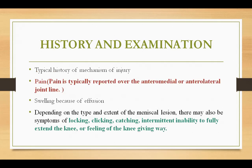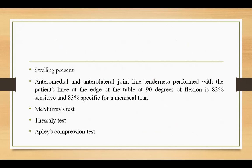On examination, there is always a history of pain and injury. Pain is typically located along the anteromedial or anterolateral joint line — anteromedial if the medial meniscus is torn, anterolateral if the lateral meniscus is torn. There is swelling due to effusion. Some patients may experience locking, clicking, catching, intermittent inability to fully extend the knee, or feeling of the knee giving way. Common tests for meniscus injury include the McMurray test, the Thessaly test, and the Apley compression test, which assess sensitivity and specificity for anteromedial and anterolateral joint line tenderness.